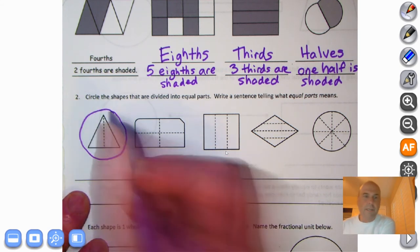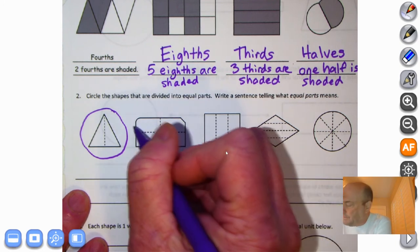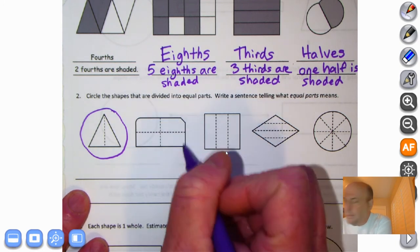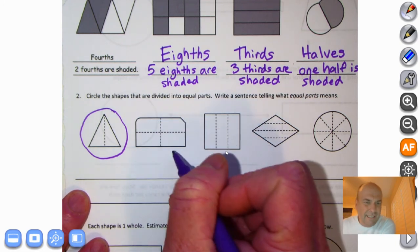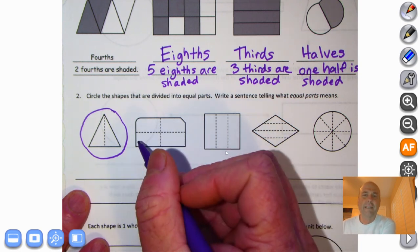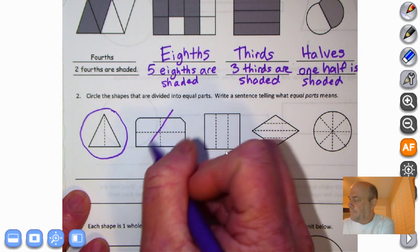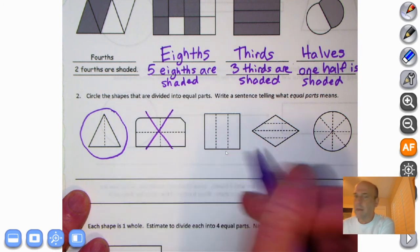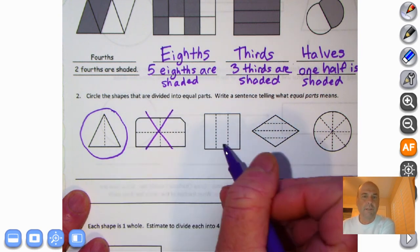Now, the fine folks at Eureka are trying to be tricky here. Look at the edges. Round it, round it. Straight and straight. So we could see that these are not equal parts. How about over here? One, two, those all look equal to me.